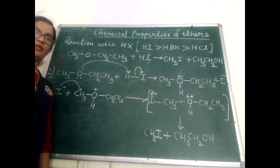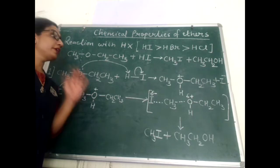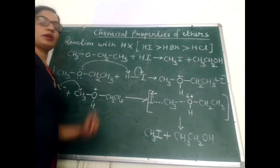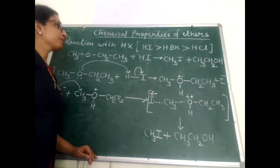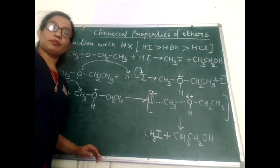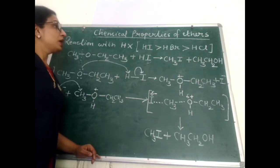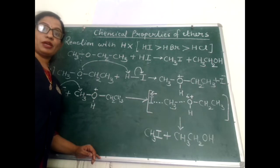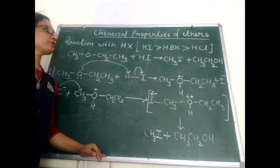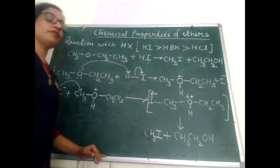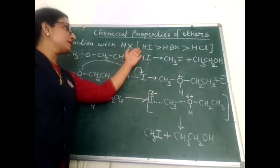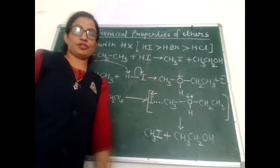After completing the methods of preparation of ether, let's start with chemical properties of ethers. Ethers are the least reactive of all functional groups, therefore their chemical properties are also limited. The first chemical property to discuss is the reaction with hydrogen halides HX. The order of reactivity of hydrogen halide for ethers is HI > HBr > HCl.